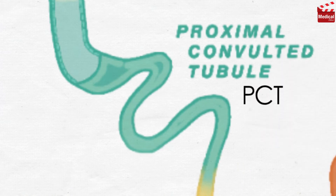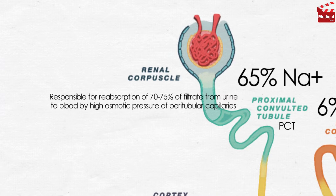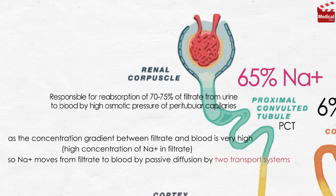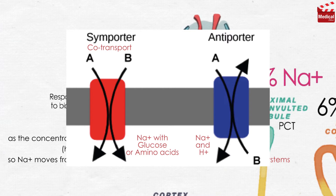The proximal convoluted tubule is responsible for reabsorption of 70–75% of filtrate from urine to blood. 65% of sodium is reabsorbed, as the concentration gradient between filtrate and blood is very high. Sodium moves from filtrate to blood by passive diffusion via two transport systems: the first is a symporter, or co-transporter, which carries two or more molecules in the same direction — responsible for reabsorption of sodium with glucose or amino acids. The second is an antiporter, which exchanges two molecules in opposite directions — responsible for reabsorption of sodium and excretion of a proton.